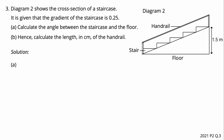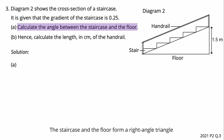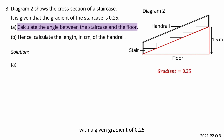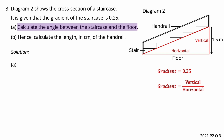Question number three: Diagram 2 shows the cross-section of a staircase. It is given that the gradient of the staircase is 0.25. Calculate the angle between the staircase and the floor. The staircase and the floor form a right-angle triangle with a gradient of 0.25. Gradient can be calculated as vertical divided by horizontal, and so does tangent theta.